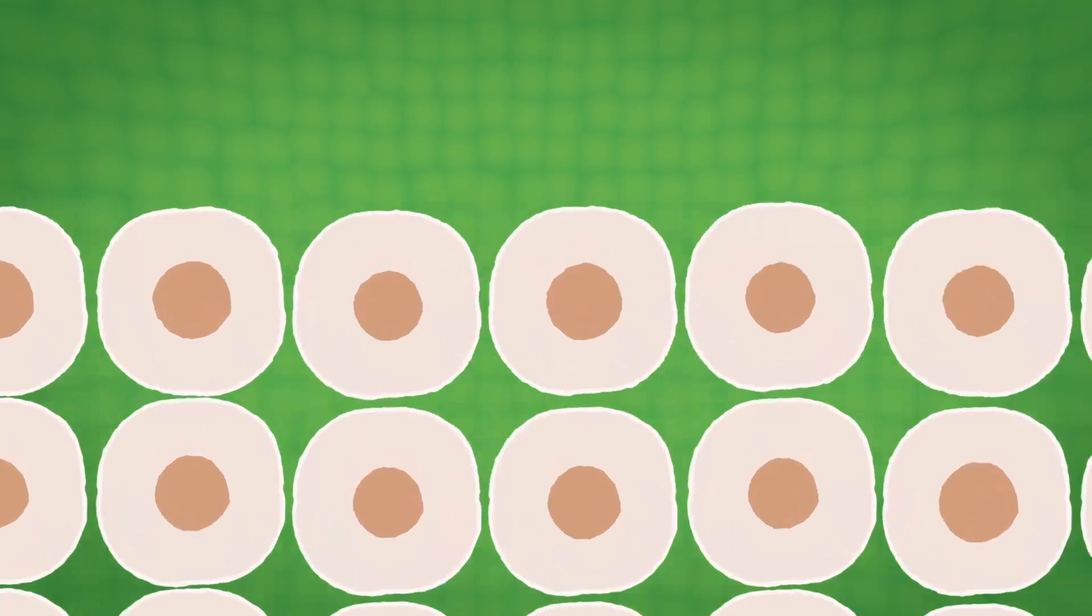Cancer starts in our cells. Cells are tiny building blocks that make up the organs and tissues of our body. Each cell has a control centre called a nucleus.